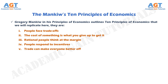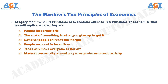Principle No. 6: Markets are usually a good way to organize economic activity. Today, most countries that once had centrally planned economies have abandoned this system and are trying to develop market economies. In a market economy, the decisions of a central planner are replaced by the decisions of millions of firms and households. Firms decide whom to hire and what to make. Households decide which firms to work for and what to buy with their incomes. These firms and households interact in the marketplace, where prices and self-interest guide their decisions. Yet, despite decentralized decision-making and self-interested decision-makers, market economies have proven remarkably successful in organizing economic activity in a way that promotes overall economic well-being.